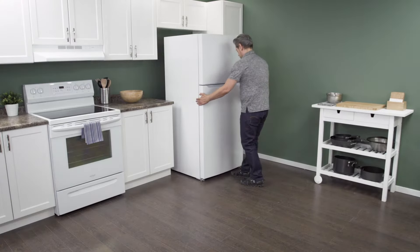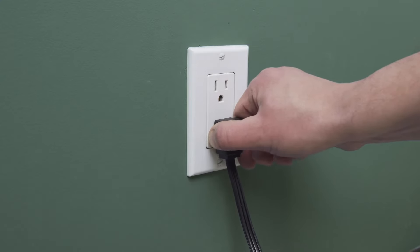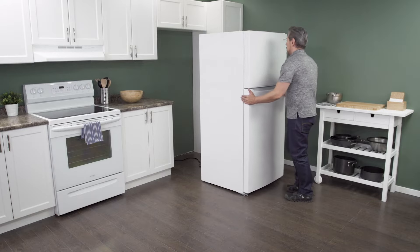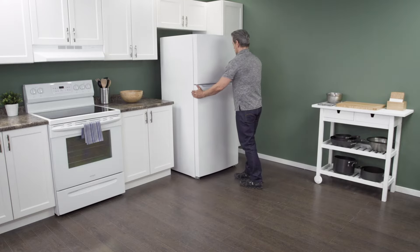First, slide the refrigerator out from the wall. When there is enough room, unplug the cord to disconnect the power. In this case, you can work on the refrigerator in place with it still against the wall.